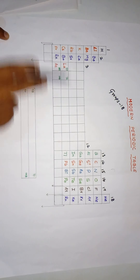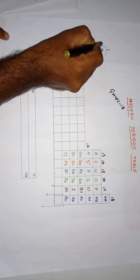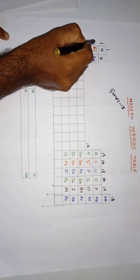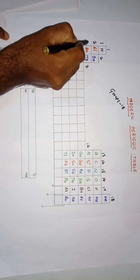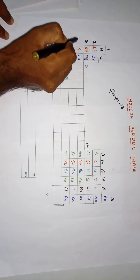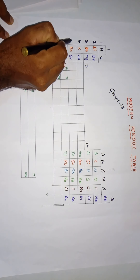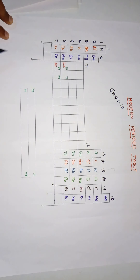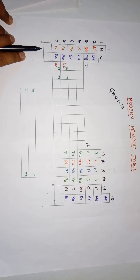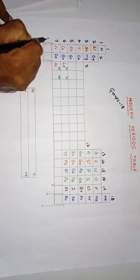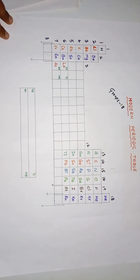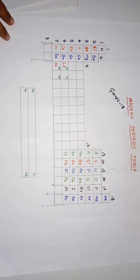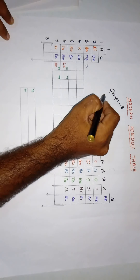We also have horizontal rows: the first horizontal row is the first period, the second horizontal row is the second period, then the third, fourth, fifth, sixth, and seventh periods. I have also put an eighth period here, and I will explain the reason afterwards why I have included it in this periodic table.